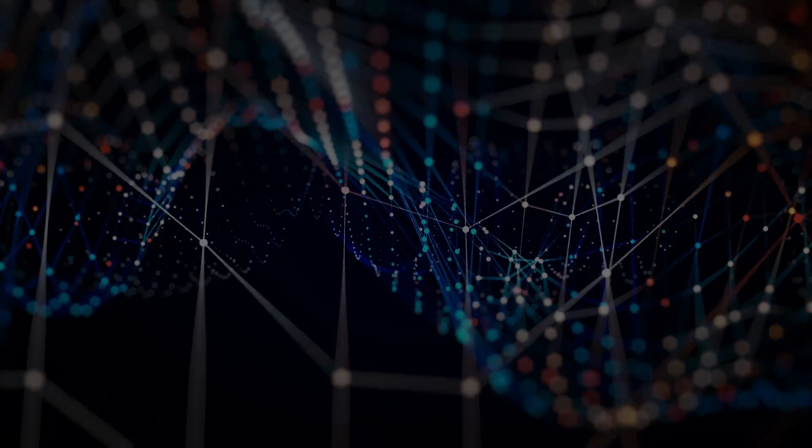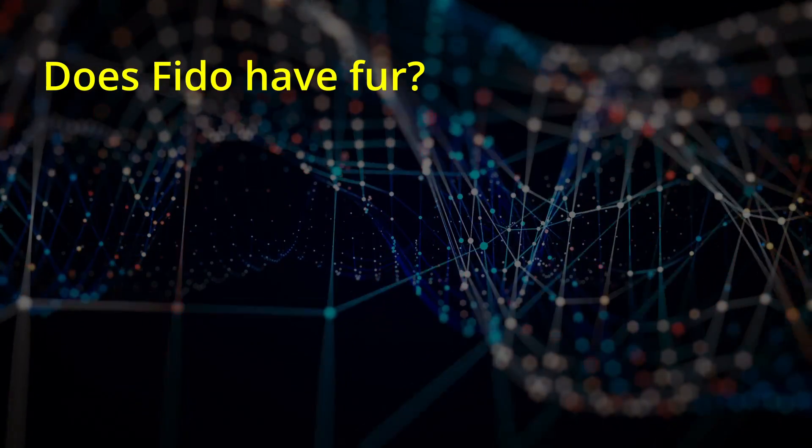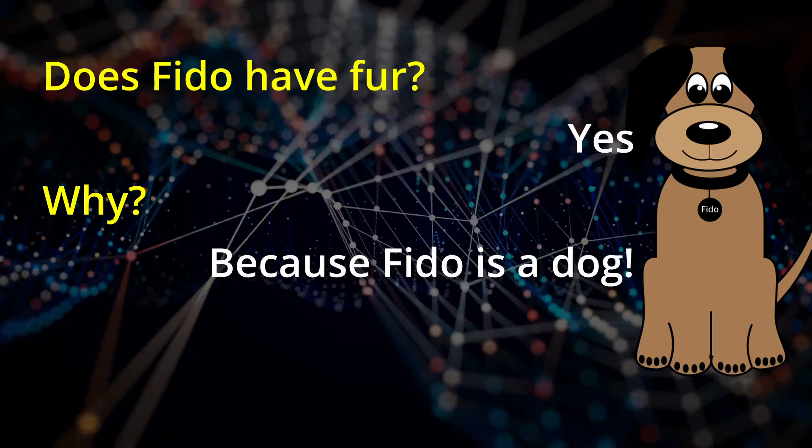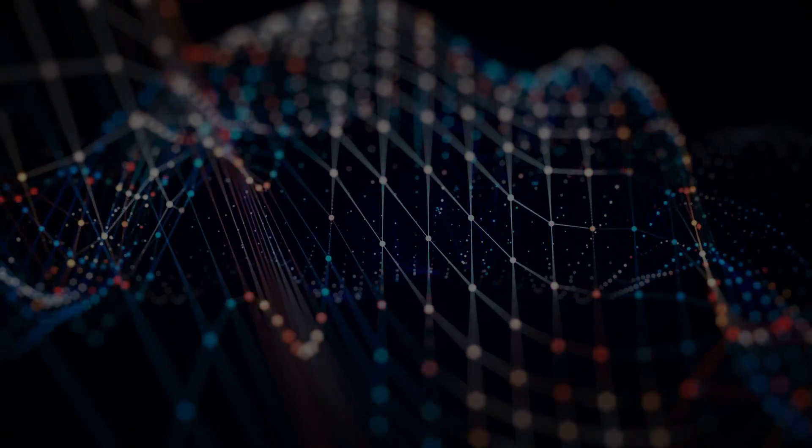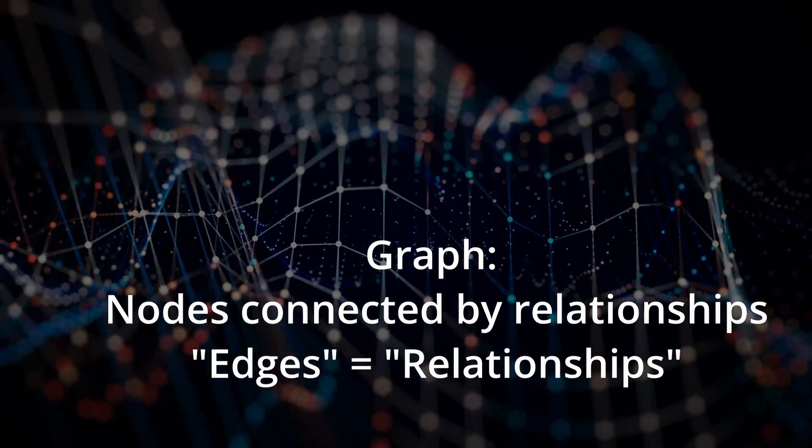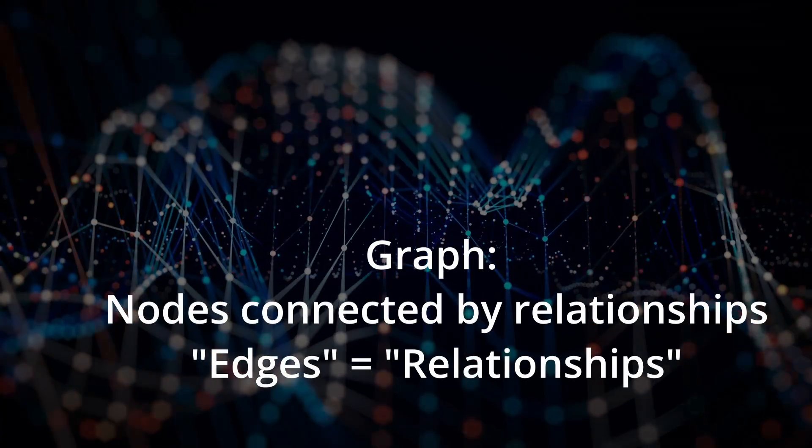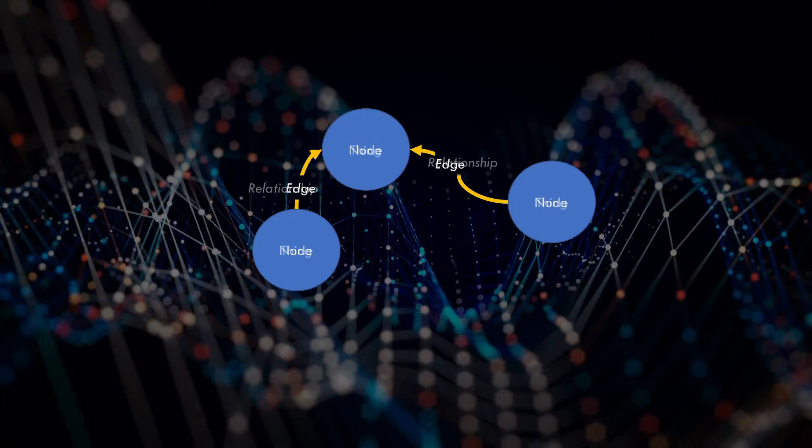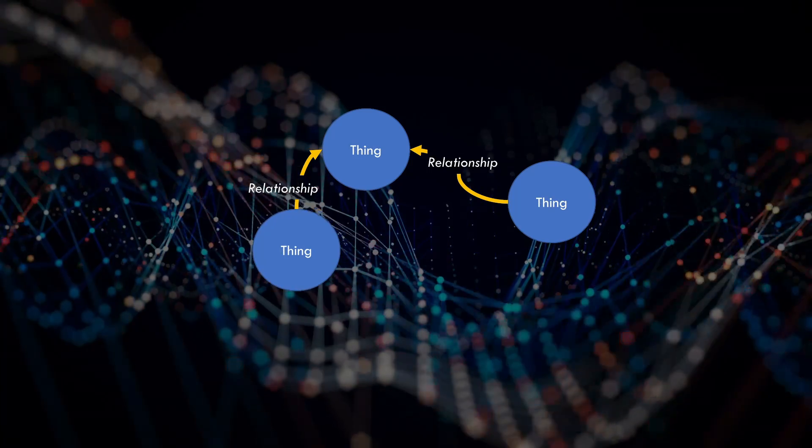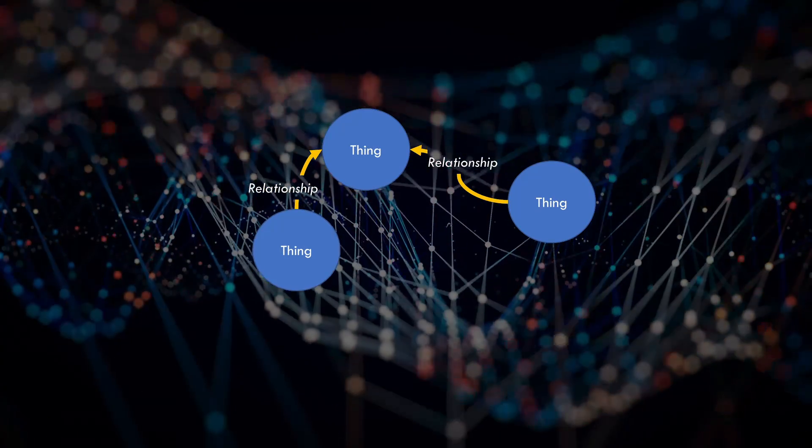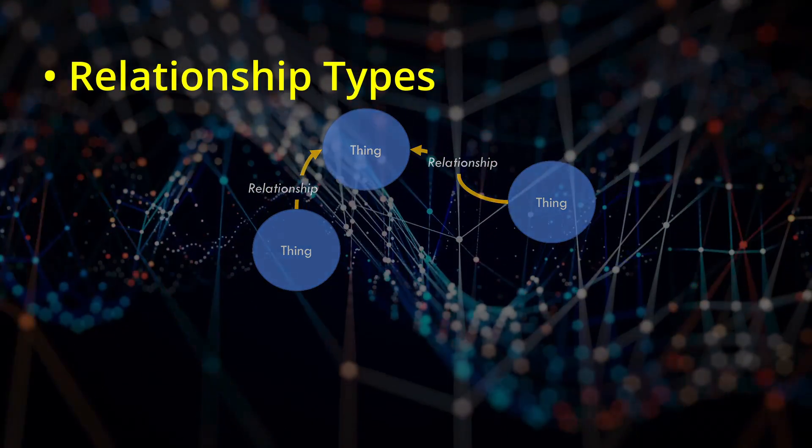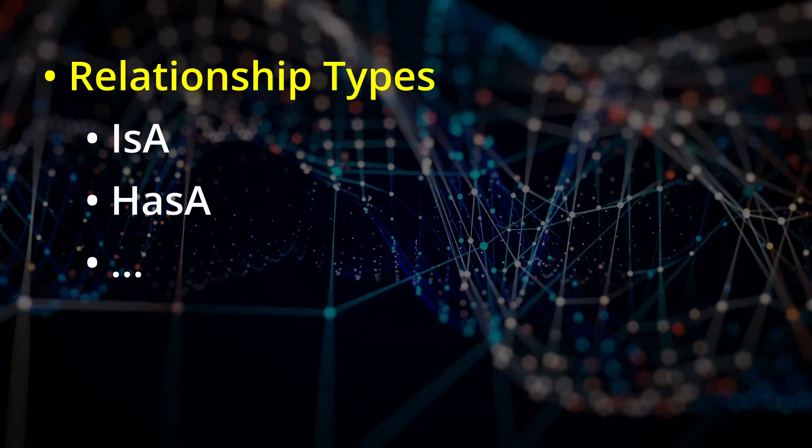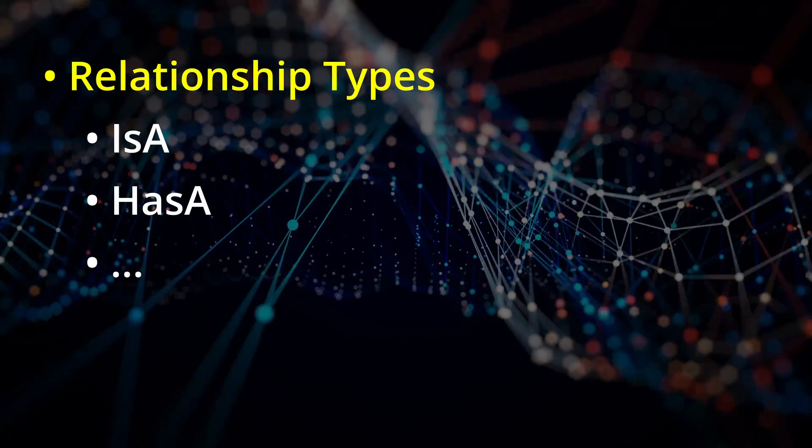Consider the following: does Fido have fur? Yes. Why? Because Fido is a dog. How could a graph be structured to answer these types of questions? As I said, graphs are made up of nodes and relationships, and for simplicity I'm going to start with just two relationship types: 'is a' and 'has a.' But your graph could have as many as you like, as I'll show later.